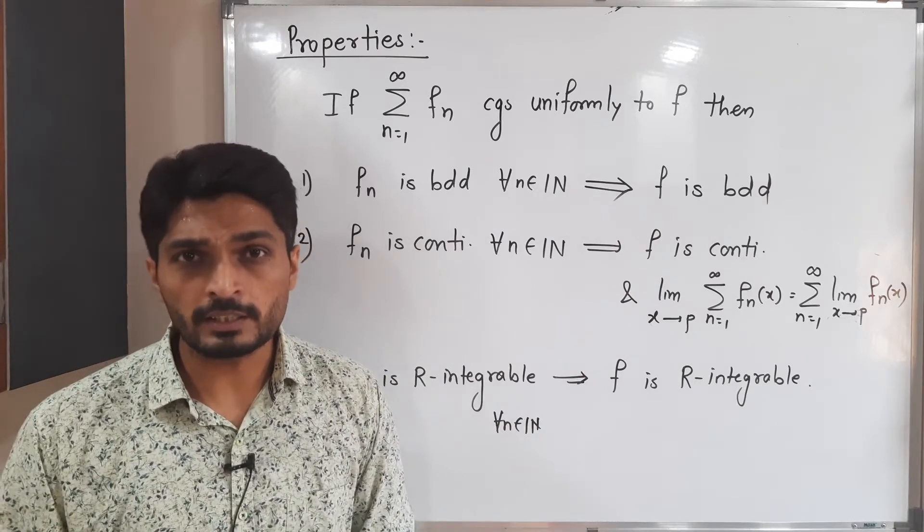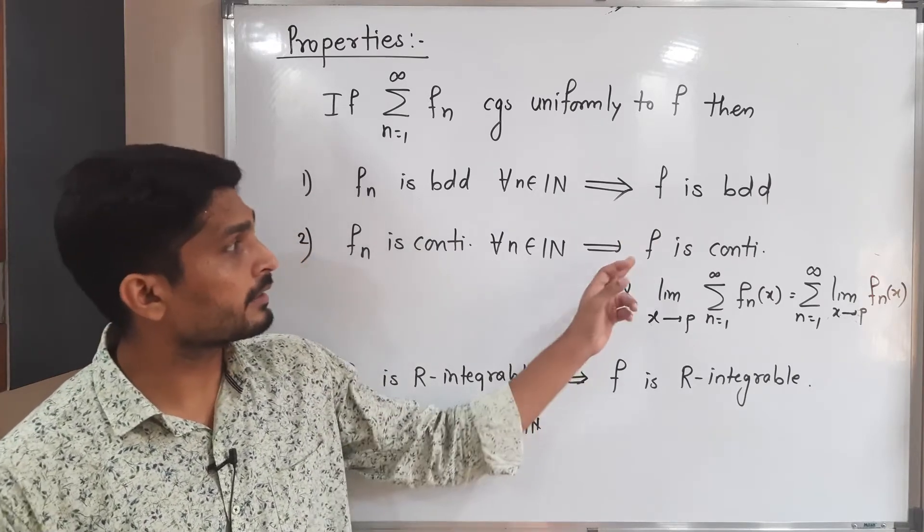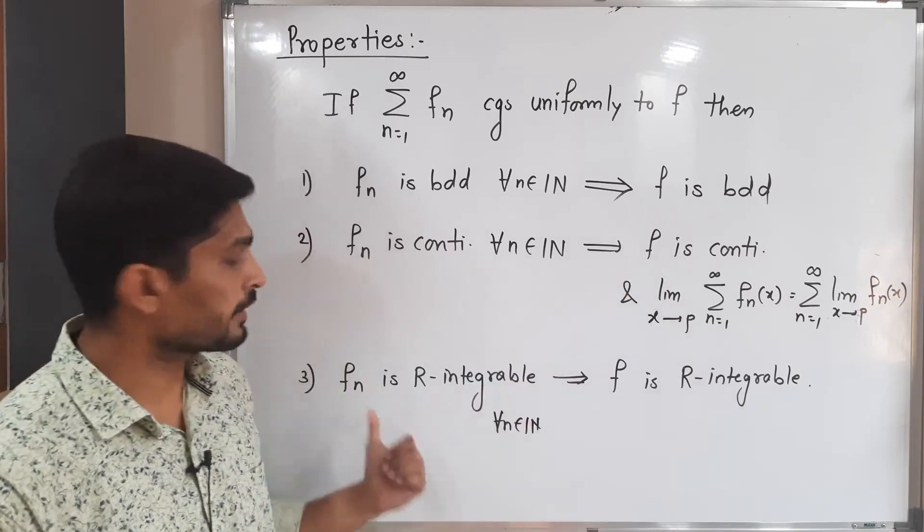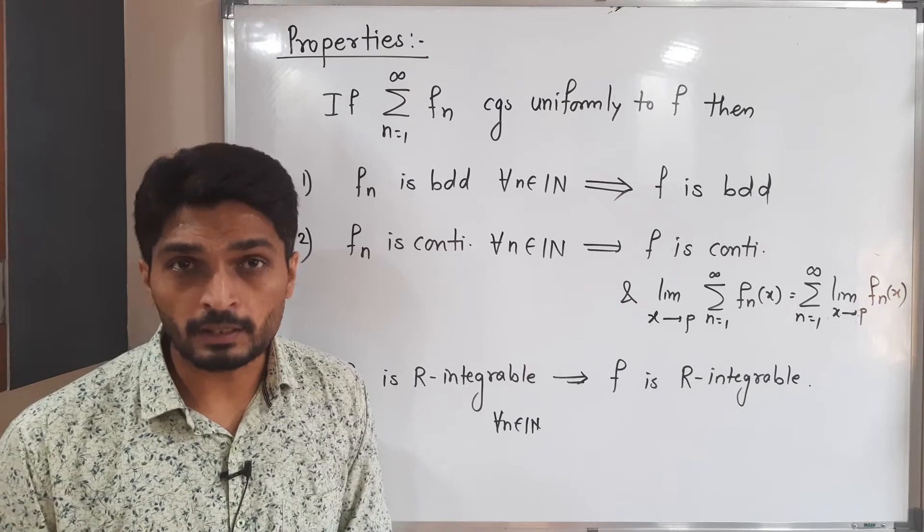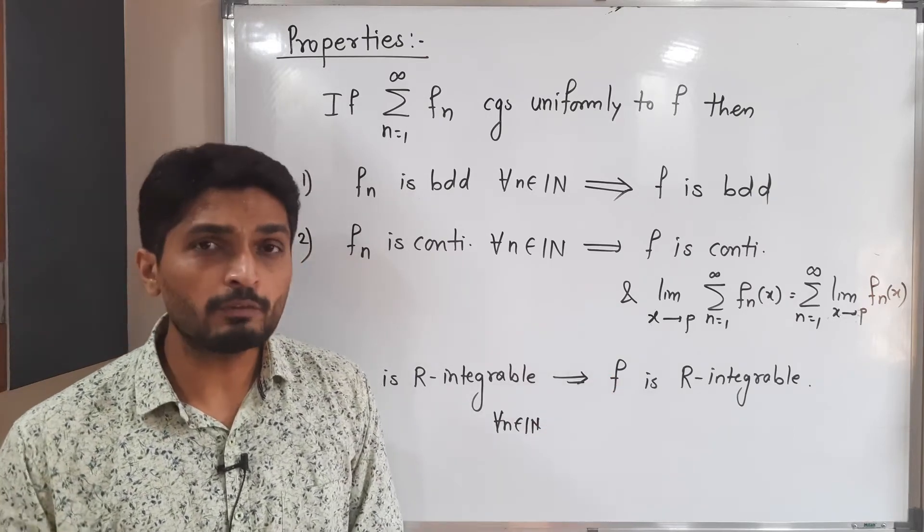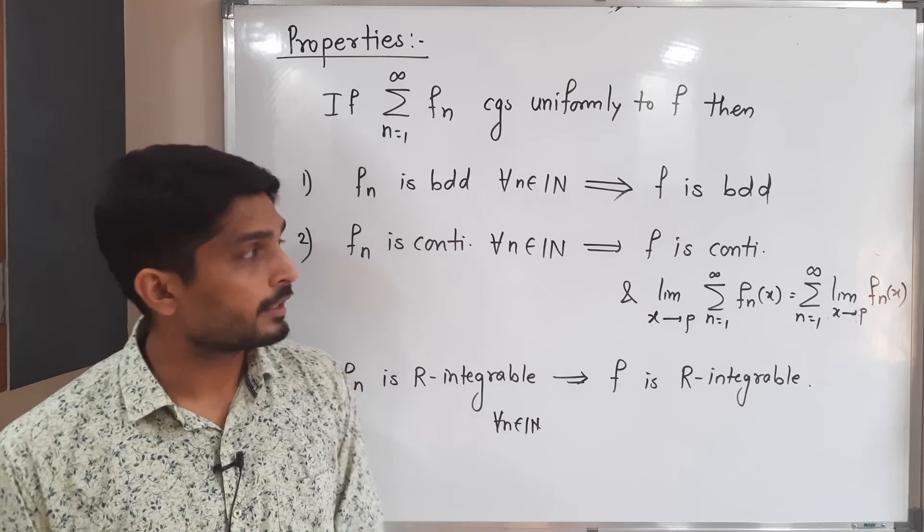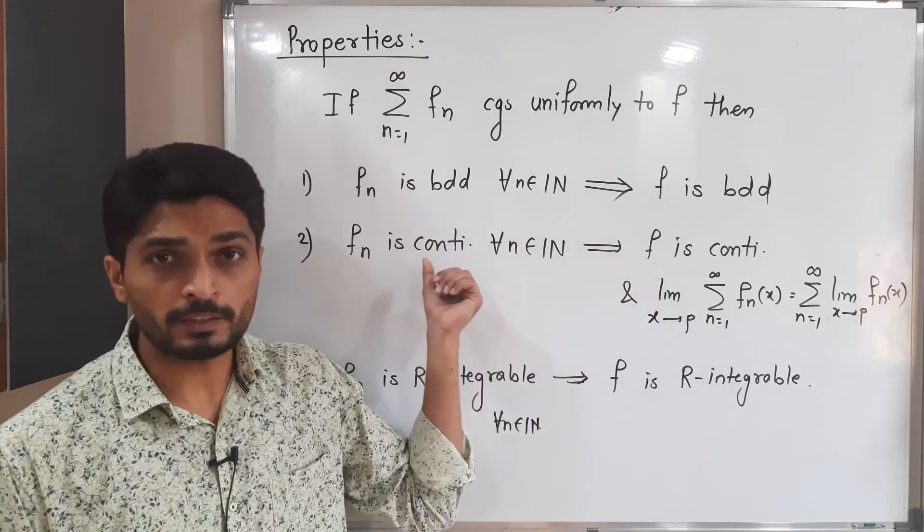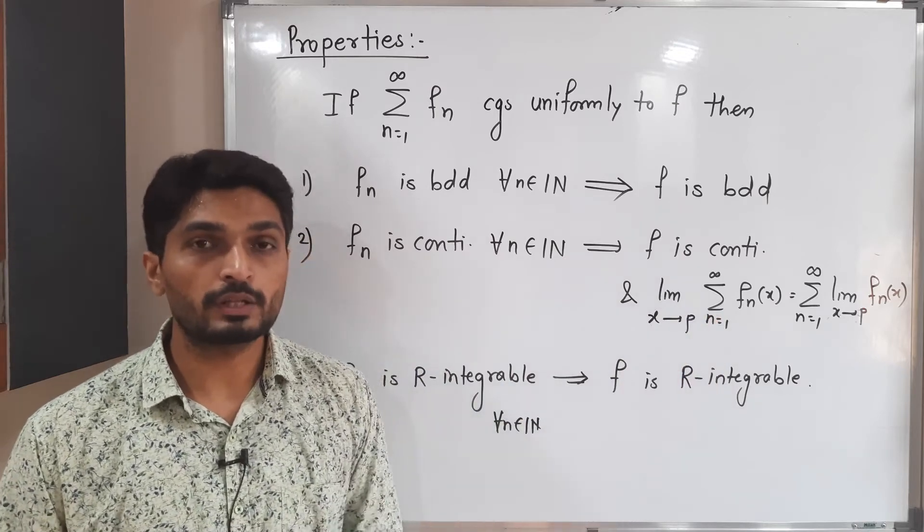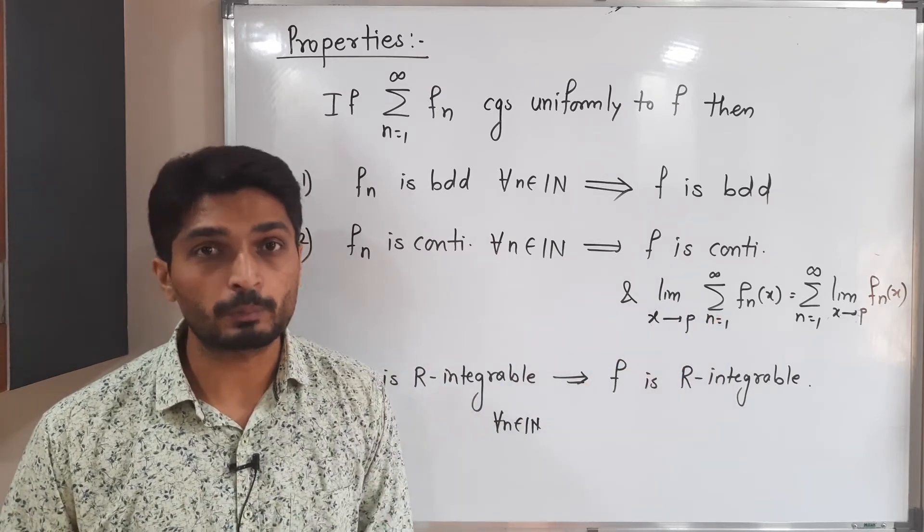If each fn is continuous then that limit f is also continuous. If each fn is Riemann integrable then that function f is also Riemann integrable. I would like to add one more thing: if f is continuous and if each fn is also continuous, then we can interchange summation and that limit. That is a very useful thing when we solve problems.